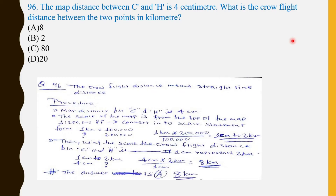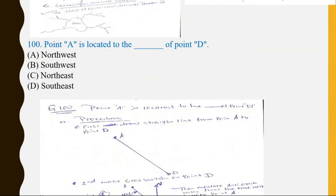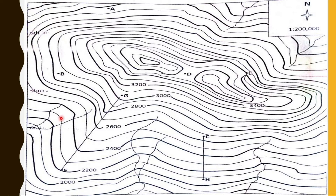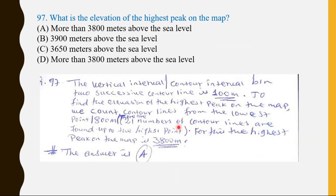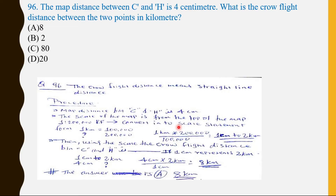The map distance between C and H is four centimeters. What is the crow-flies distance between the two points in kilometers? Let us first look at the parts of the map. The distance from C to H is given as four centimeters — that is the map distance.